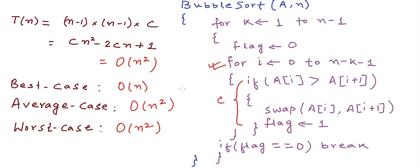Bubble sort is an in-place and stable sorting algorithm, with a worst-case time complexity of O(n²). This is it for this lesson. Thanks for watching.